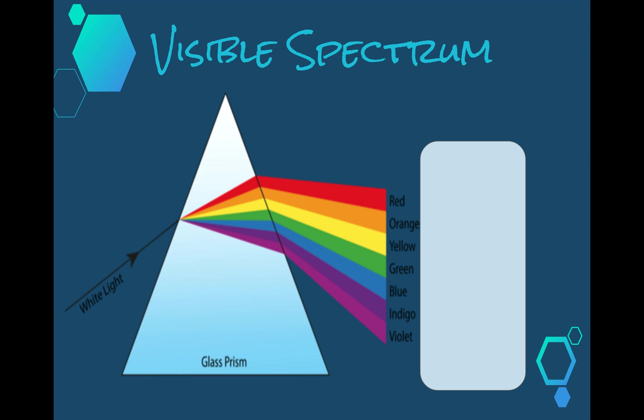These are the colors of the rainbow with which we are familiar. So in order we have red, orange, yellow, green, blue, indigo and violet, or a way to remember them in order is ROYGBIV. So these seven colors form the visible part of the electromagnetic spectrum that we can see.